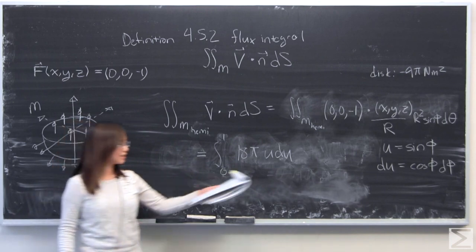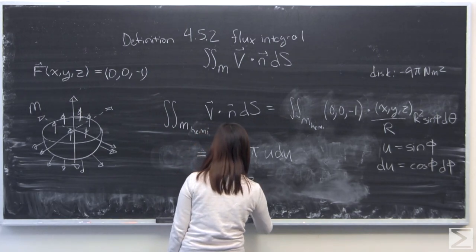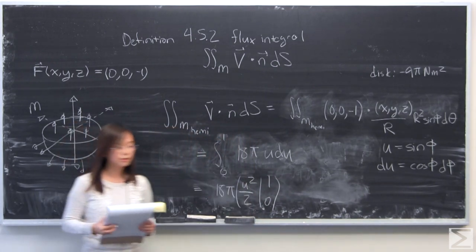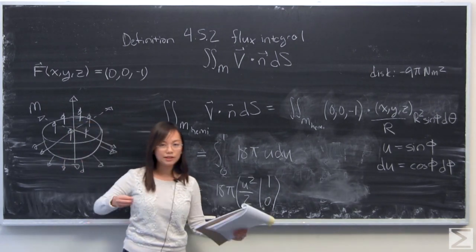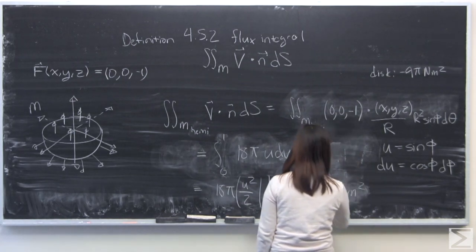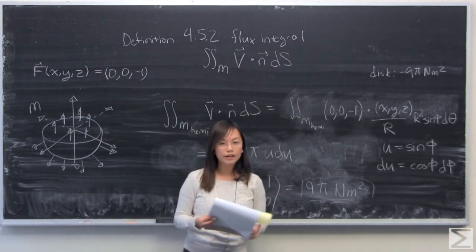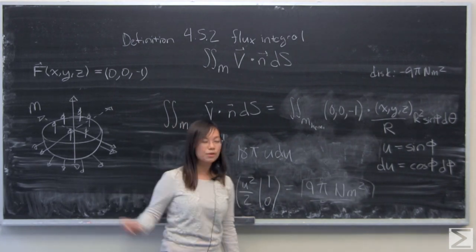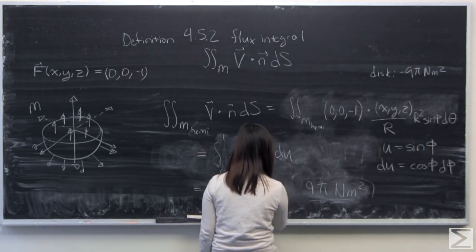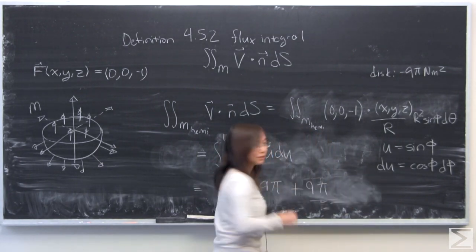So suddenly, with that u-substitution, this integral becomes very easy to solve. So very simply, just 18π u²/2, evaluate from 0 to 1, plug that in, and you will get 9π newton meter squared. And that is for the hemisphere, and for the disk we evaluated that earlier. We got -9π newton meter squared. And you get your final result by adding both of those. Very simply, -9π plus 9π will give you your final result of 0.